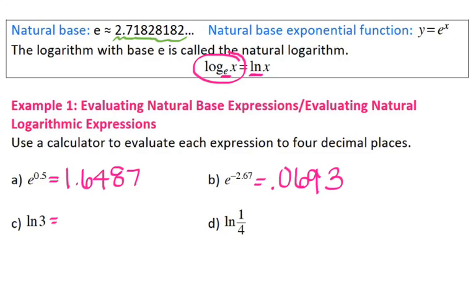Natural log — hitting the natural log on the calculator of 3 gives me 1.0986. And evaluating the natural log of 1.4 gives me negative 1.3863. So the first example is just getting you used to where those buttons are on the calculator.